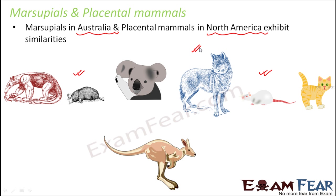Looking at the marsupial wolf and the placental wolf, both are carnivorous. They have limb bones adapted for running, allowing them to run very fast to catch prey, and sharp teeth for tearing meat. However, the Tasmanian wolf has become extinct — the last Tasmanian wolf died in 1936. Despite this, all these marsupial animals have a close relation with placental mammals even though they exist in two different geographic locations.